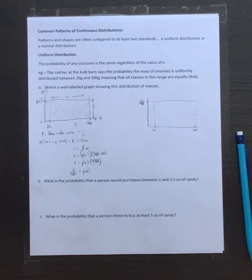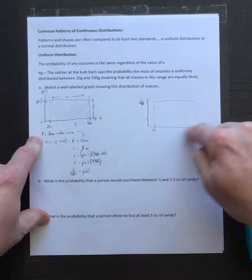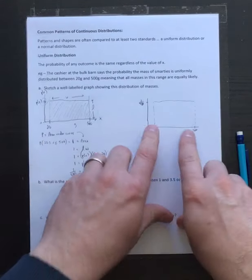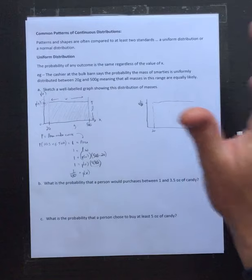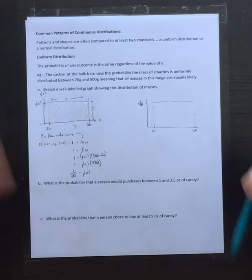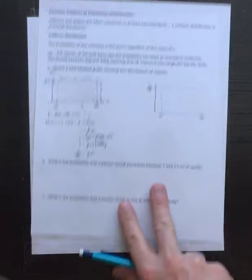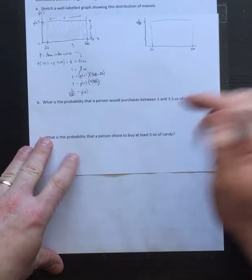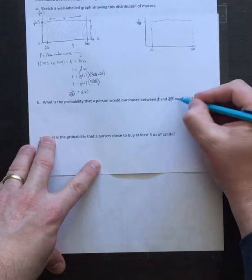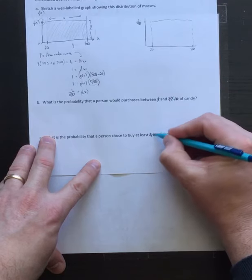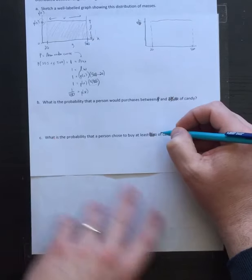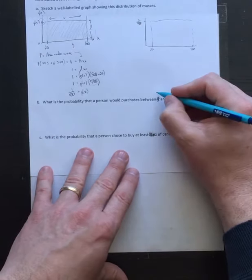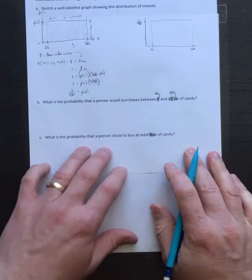From this figure it becomes really useful for us to start doing some calculations, for two reasons: one, we know all of the values for lengths and widths. If we want to figure out the probability of a range, all we have to do is find that area - it's going to be another rectangle. So let's look at a couple of examples. What is the probability that a person would purchase between 100 grams and 400 grams?